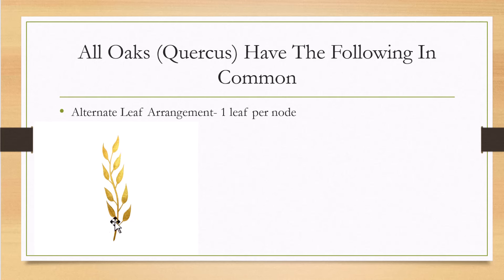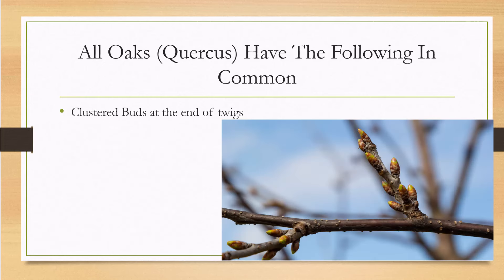Opposite leaf arrangement means the leaves are directly across from each other. Whorled means three or more leaves per node — three, four, five, six, however many coming out of one node. All oak trees are alternate: one leaf per node, which gives that zigzag pattern on the stem. The next thing is that all oak trees will have clustered buds on the ends of twigs — anywhere from three to seven or more buds at the twig tips.